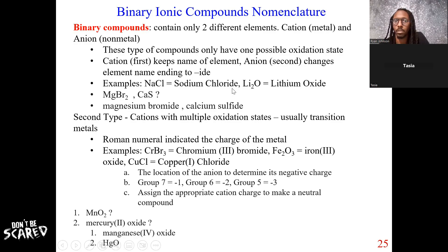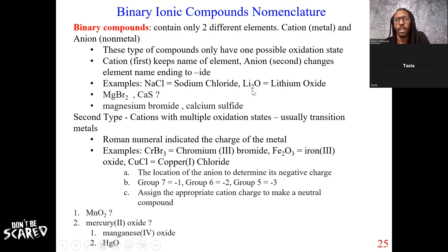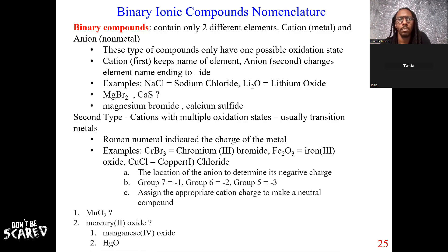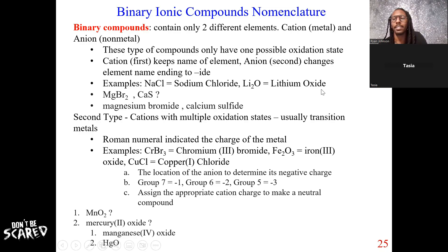So do we always change the ending to -ide? Yes, we will always change the ending of the anion every single time. For example, even though it's Li₂, we still just call the cation lithium — Li is lithium, keep that exactly the same. The second element is oxygen, and for the second element we have to change the ending. So it's not going to be lithium oxygen — it's going to be lithium oxide. I changed oxygen to oxide, replacing the -gen ending with -ide.